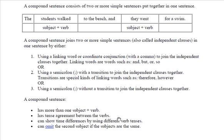They have a tense agreement between the verbs. In this case, they are different tenses. The students walked, past tense. They went for a swim, sort of future tense. To put them in both tenses, the same tense, the students walk to the beach and they go for a swim.